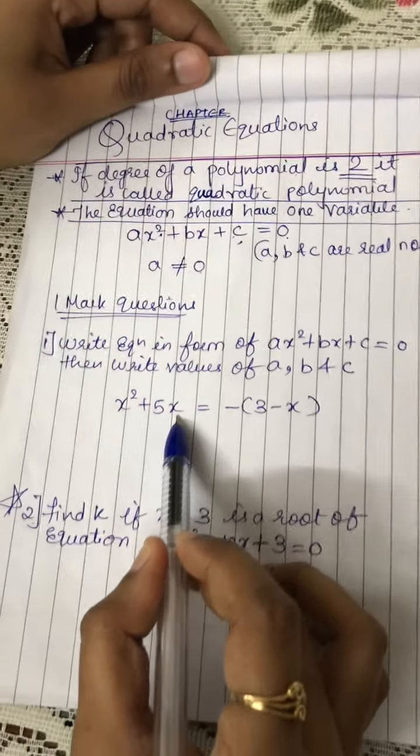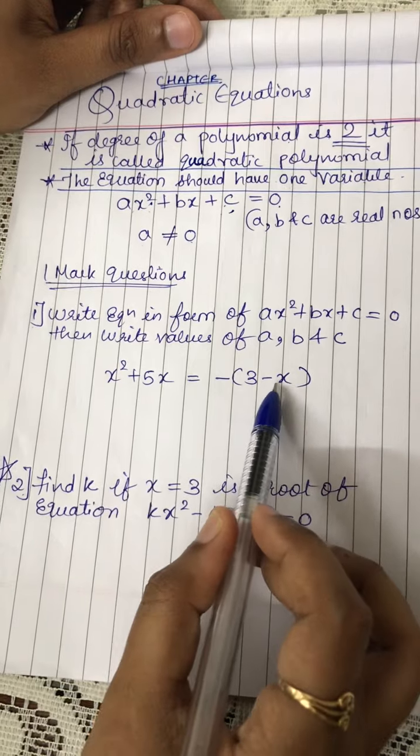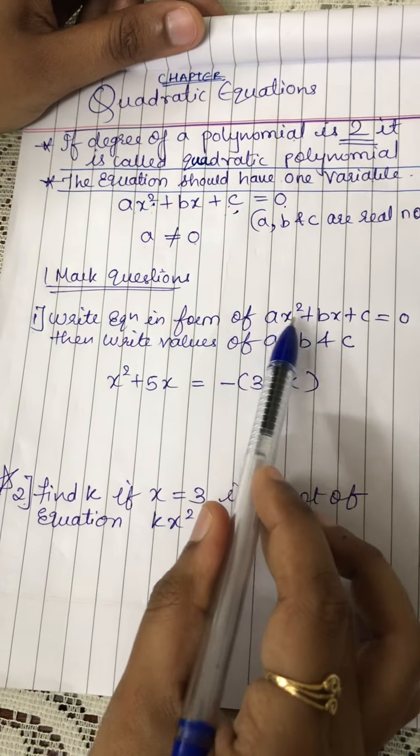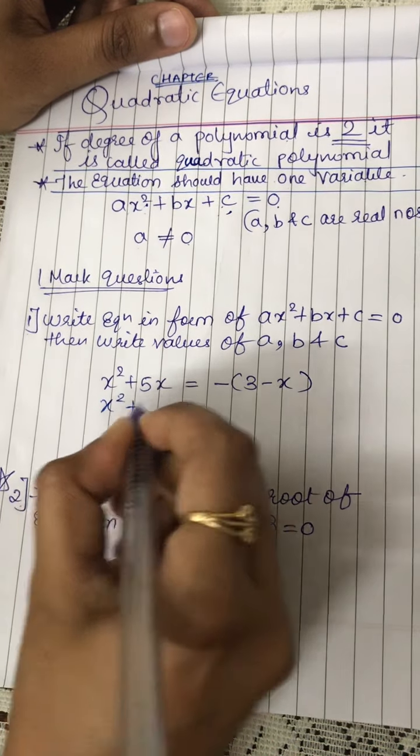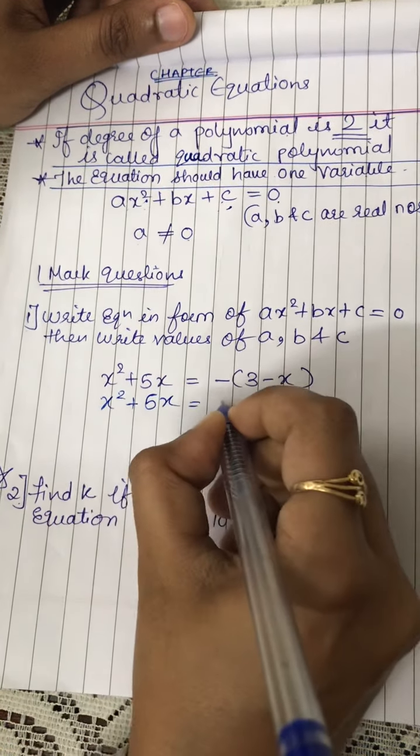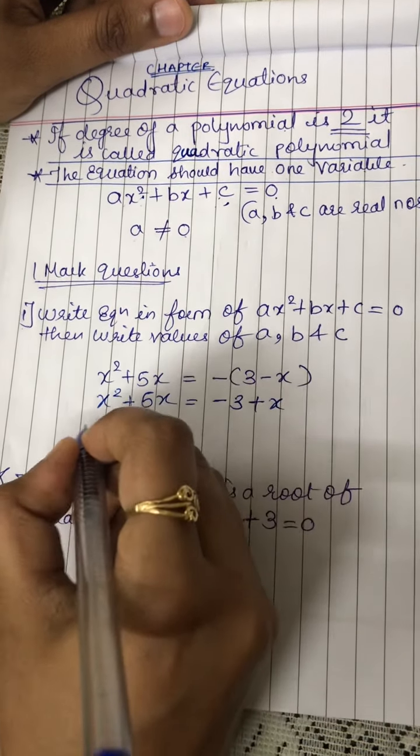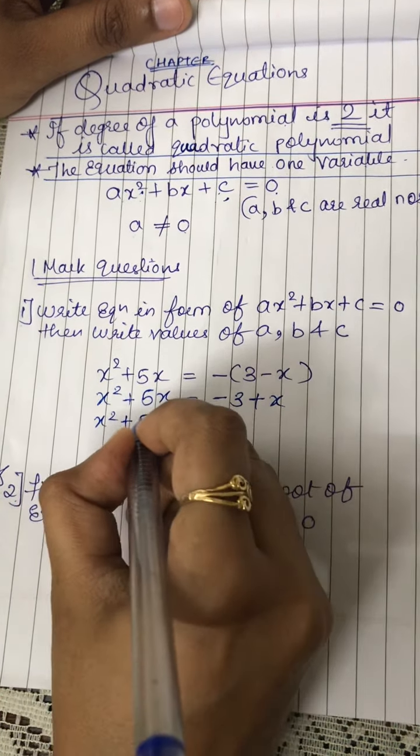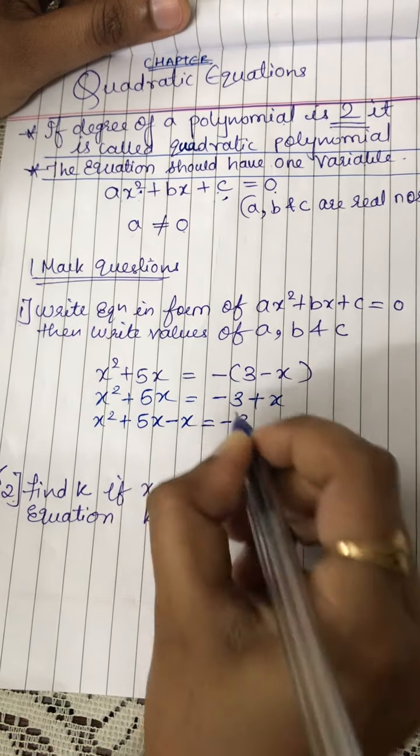x square plus 5x is equal to minus 3 minus x. First, I have to arrange the equation in the form of ax square plus bx plus c is equal to 0. So x square plus 5x is equal to minus 3 plus x. Rearrange the equation. x square plus 5x plus x will become minus x is equal to minus 3.